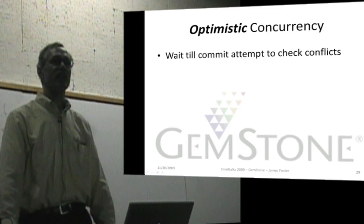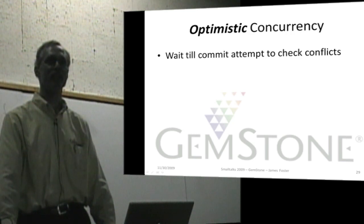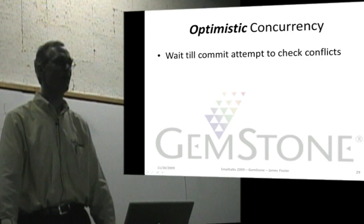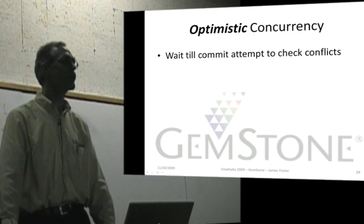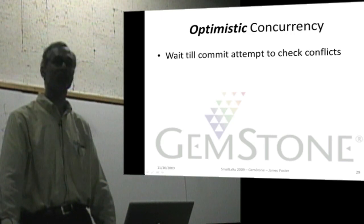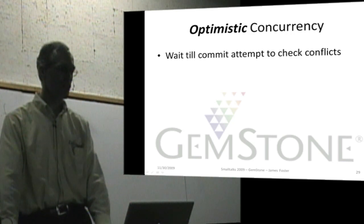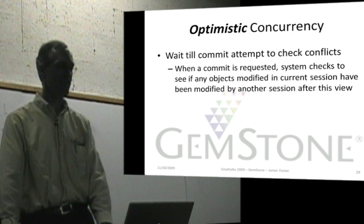Now, concurrency. There are challenges with concurrency. Any multi-user, multi-VM system will have these challenges. There are two broad approaches: optimistic concurrency and pessimistic. With optimistic concurrency, you wait until a commit is attempted and look for conflicts.